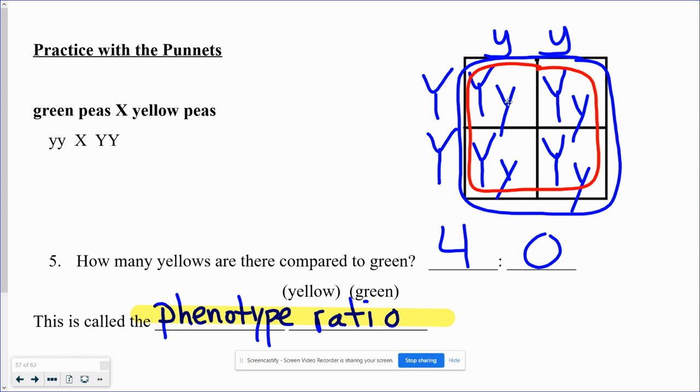Phenotype ratio looks at the outside appearance. So on the outside, all four of these are going to be yellow.